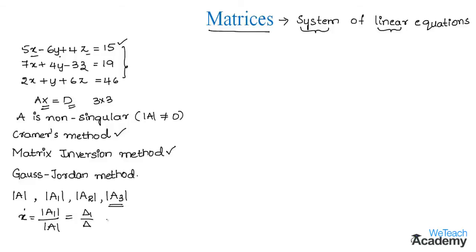The value of y equals delta2, which is the value of |A2| divided by delta. And the value of z equals delta3 divided by delta. In this way we find the solutions using Cramer's method.